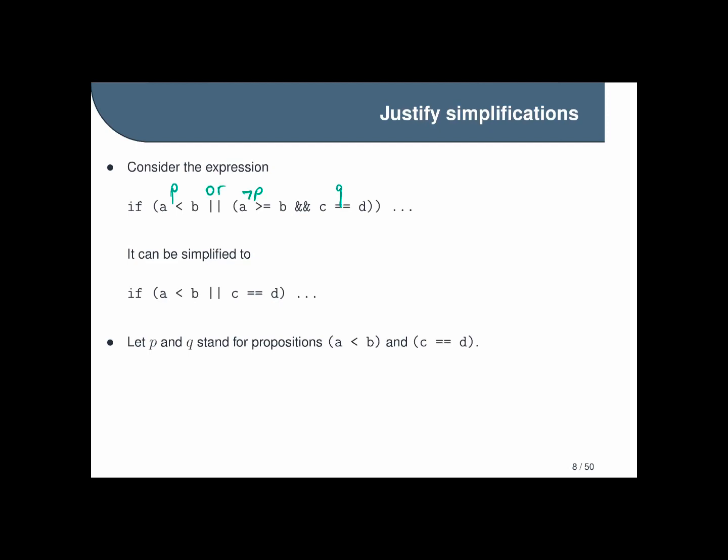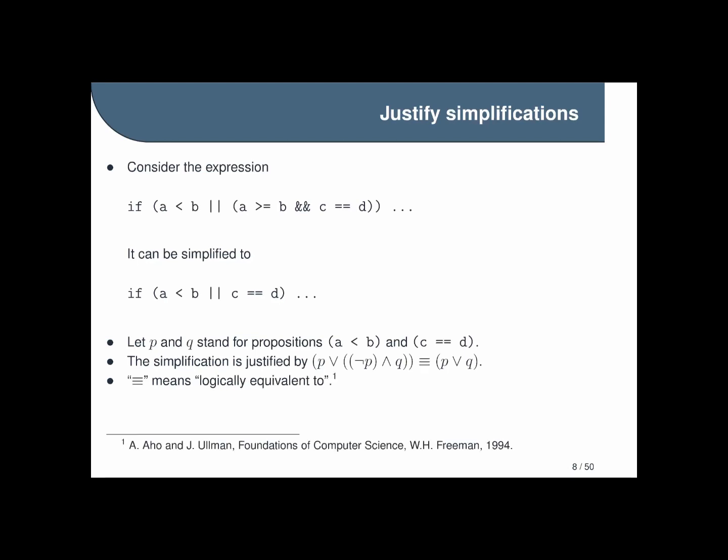So the final statement we end up with then is p or not p and q, and our simplification turns out to be justified by the fact that p or not p and q is equivalent to the statement p or q, as propositional logic will allow you to show. Just in case this is a new symbol, I'll draw attention to the fact that we're using these three horizontal bars here to mean logically equivalent to. This and the previous example covers the applications I mentioned about expressing assertions precisely, examining consistency, and justifying simplifications.